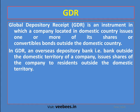In GDR, an overseas depository bank — that is, a bank outside the domestic territory of the company — issues shares of the company to residents outside the domestic territory. For example, an Indian company wanting to collect funds from the American market would work with an American depository bank.